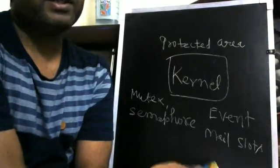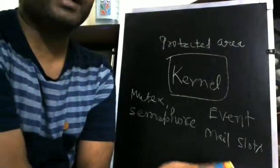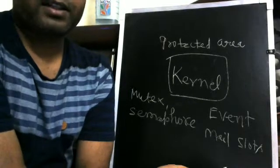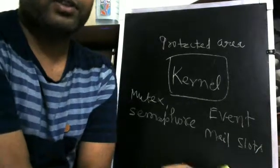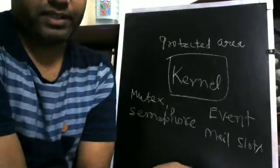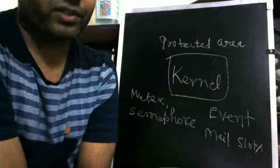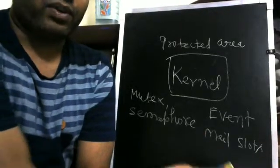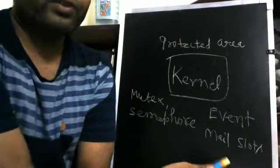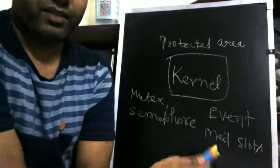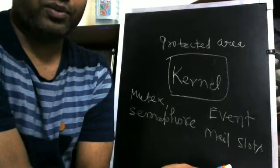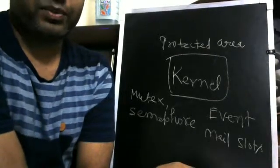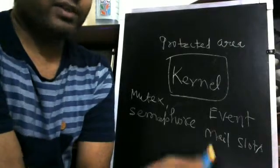Kernel objects are maintained by the kernel of the operating system - they are created by the kernel and destroyed by the kernel. You cannot destroy them as a programmer. So how do they work throughout the system and how are they able to help you when you use them in your program?